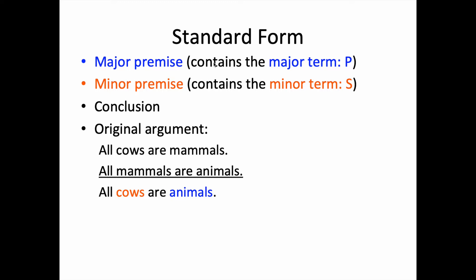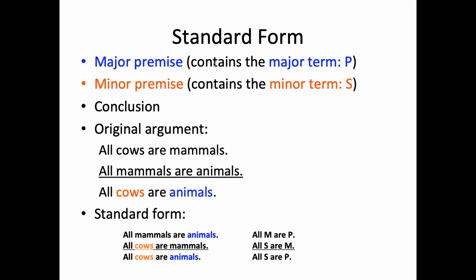Let's take a look at an argument. All cows are mammals, all mammals are animals, so all cows are mammals. To put the argument in standard form, we look to the conclusion and we find the minor term and the major term. Then we look to see which of the two premises contain each of those terms, and we organize those premises accordingly. So we end up with: all mammals are animals, all cows are mammals, and all cows are animals.